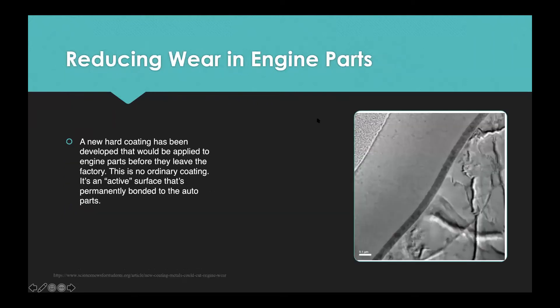For creative ways to reduce wear in engine parts: a company actually has developed a new hard coating that would be applied to engine parts before they leave the factory. This is no ordinary coating, it's an active surface that's permanently bonded to the auto parts and it doesn't just sit there, it interacts with the motor oil to create a slick carbon film that cuts friction better than oil would alone. The new coating also may decrease how often a driver must change the oil and it can also help reduce the need for metal-based additives for motor oil.